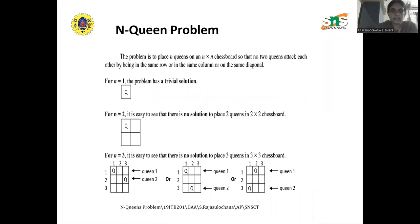Consider the N-Queens problem: the problem is to place N queens on an N×N chessboard so that no two queens attack each other. Two queens attack each other only if they are placed in the same row, same column, or same diagonal. You should not place a queen under such circumstances.